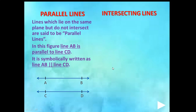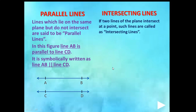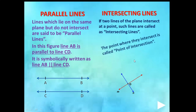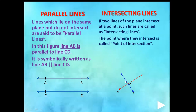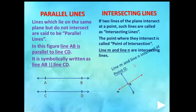What are intersecting lines? If two lines in a plane intersect each other at a point — that is, they pass through each other at a point — such lines are called intersecting lines. In the figure, line M and line N are both passing through a point, intersecting each other at point O. So line M and line N are intersecting lines. Point O is called the point of intersection.